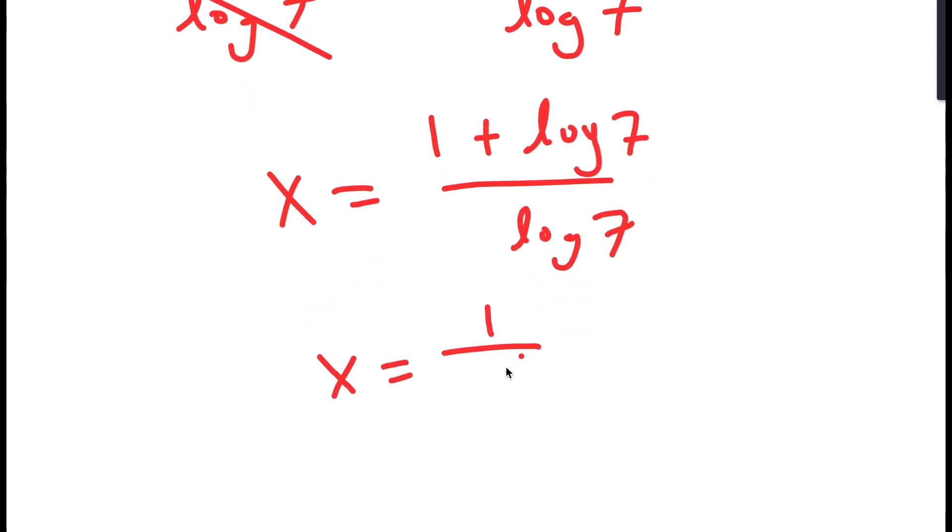Now, from here, I get x equals 1 over log 7 plus log 7 over log 7, which is 1.